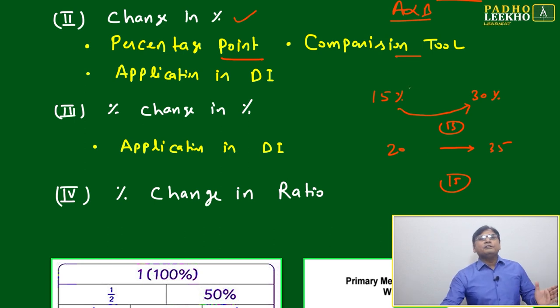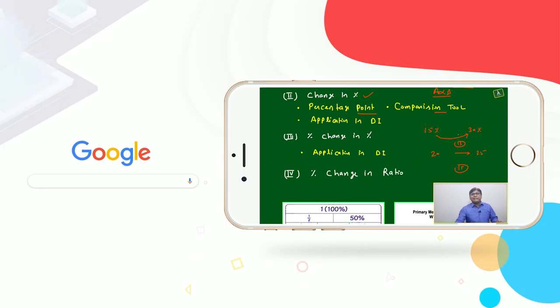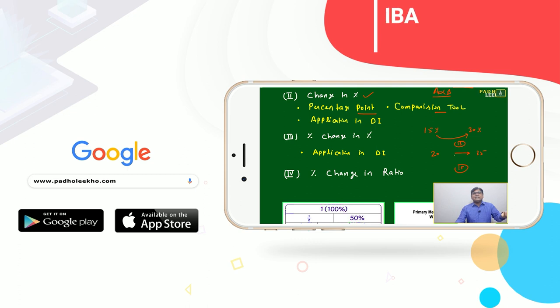15 to 30, it is 15—15 percentage points changed or 15 percentage points increased. We can say it like that. We can't say here '15 percent'—it's 15 percentage points.